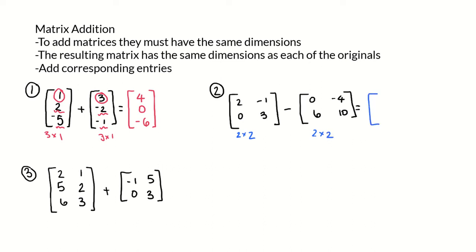The result is going to be a 2×2 matrix, and we subtract the corresponding entries: 2-0 is 2, -1-(-4) is positive 3, 0-6 is -6, and 3-10 is -7. So that is the result matrix.